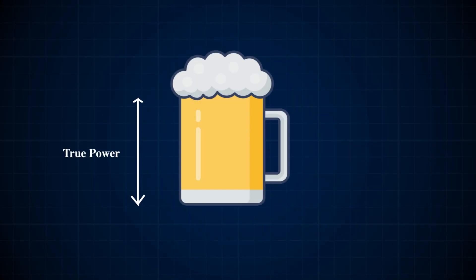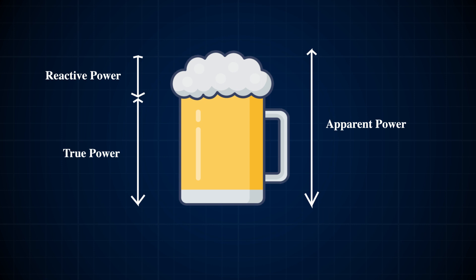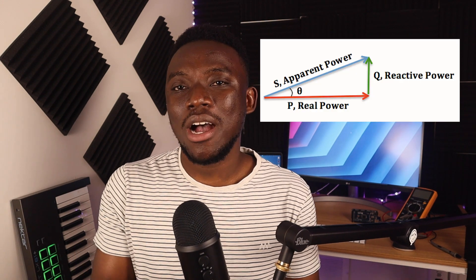The most common illustration to explain apparent power is the beer analogy. Take a look at a glass of beer. The portion of the glass that contains the actual beer represents true power. The foam represents reactive power. And the total volume or the capacity of the glass represents apparent power.